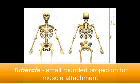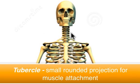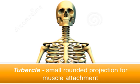A tubercle is merely a small rounded projection or outgrowth. Here on the proximal end of the humerus, we've got the greater tubercle, and then down here on the bone you would see — it's not very well shown on the skeleton — the lesser tubercle. Tubercles are there primarily for muscle attachment, not for articulation with another bone.